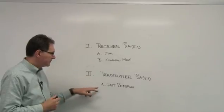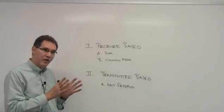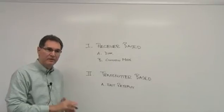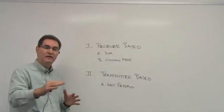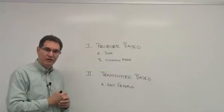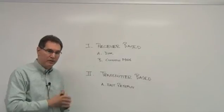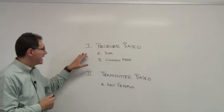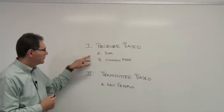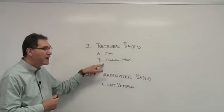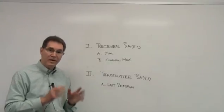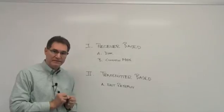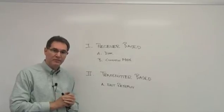In the transmitter based, fast retrain, that is also a notch but put in the transmitter rather than the receiver. The receiver does the detection and then sends information to the transmitter as to where the notch could be placed. And here in the receiver based algorithms, the major difference between them is that the common mode version requires specialized five channel magnetics in order to be able to sense and recover the common mode interference.